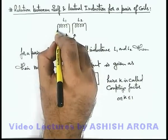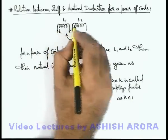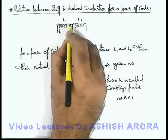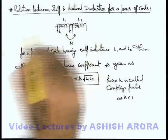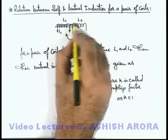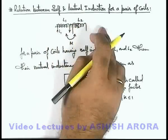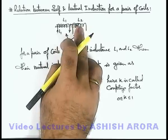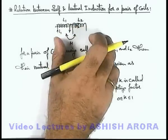Here we can say if a current I1 flows through the first coil, a part of flux due to I1 is linked with the second coil. So if the second coil is far away from the first coil, the percentage of flux of the first coil which is linked with the second will decrease due to the separation between the two.